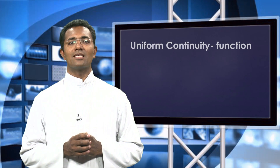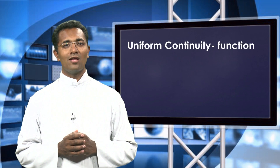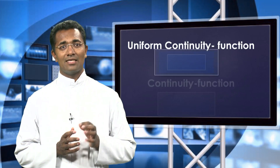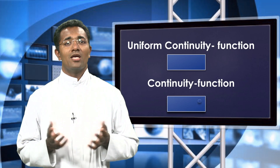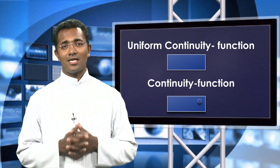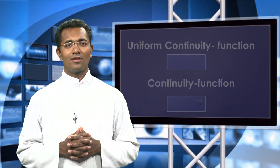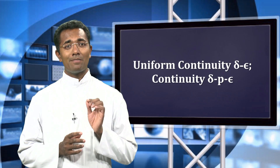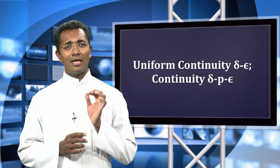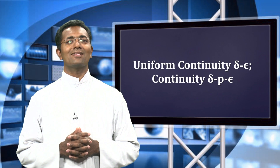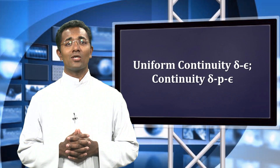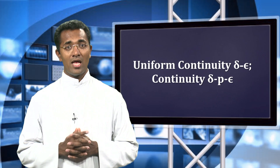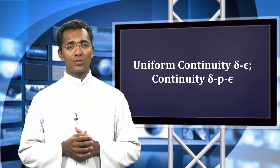Uniform continuity is a property of a function on a set, whereas continuity is defined for a point in that particular set. For a uniformly continuous function, delta depends on epsilon alone, whereas for a continuous function, delta depends on epsilon and the particular point we choose.